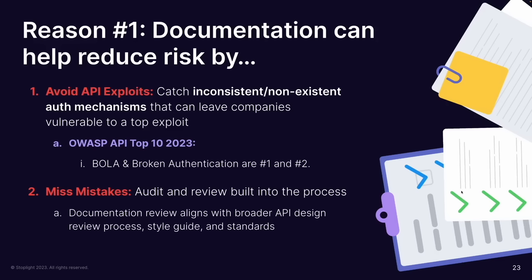If you document an API, one of the first things you do is describe getting started — how to get that token and attach it to the API call. If that doesn't exist when you're writing documentation, the flashing red lights are blasting: there is a huge problem, we cannot use this until it's fixed. Inconsistent auth patterns between APIs is another red flag — one consistent method of auth is key both for usability and for focusing security efforts.